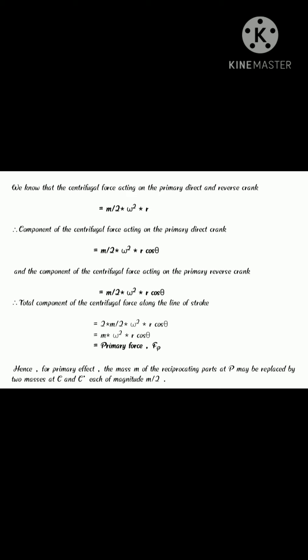M by 2 omega square R cos theta in the direction from O to P. So that total component of the centrifugal force along the line of stroke equal to 2 into M by 2 into omega square R cos theta equal to M omega square R cos theta equal to primary force Fp. Hence, for primary effect, the mass M of the reciprocating parts at P may be replaced by two masses at C and C dash each of magnitude M by 2.